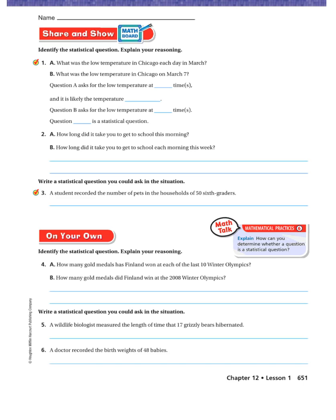Share and Show. Identify the statistical question and explain your reasoning. Option A: What is the low temperature in Chicago each day in March? Option B: What is the low temperature in Chicago on March 7th? Question A asks for the low temperature at 31 different times and the temperature will likely vary, so Question A is the statistical question. Question B asks for the temperature just one time.